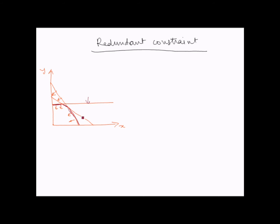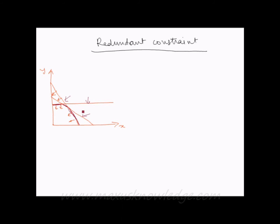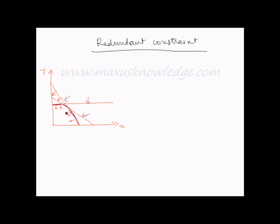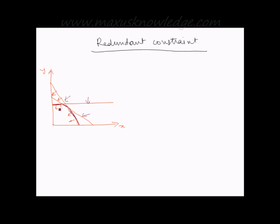This line is contributed by this constraint, this line is contributed by this constraint, and this line is contributed by this constraint. So all three constraints have contributed to the boundary of the feasible solution region.